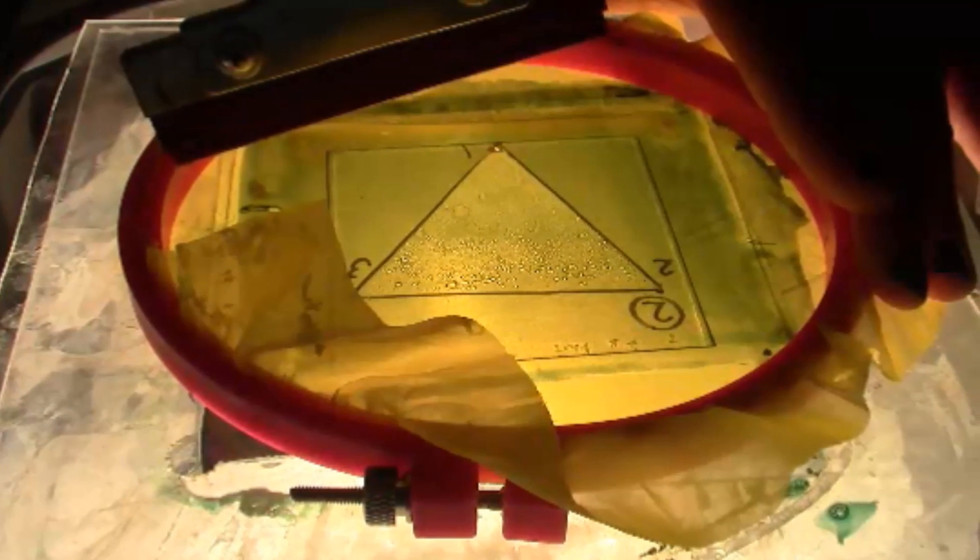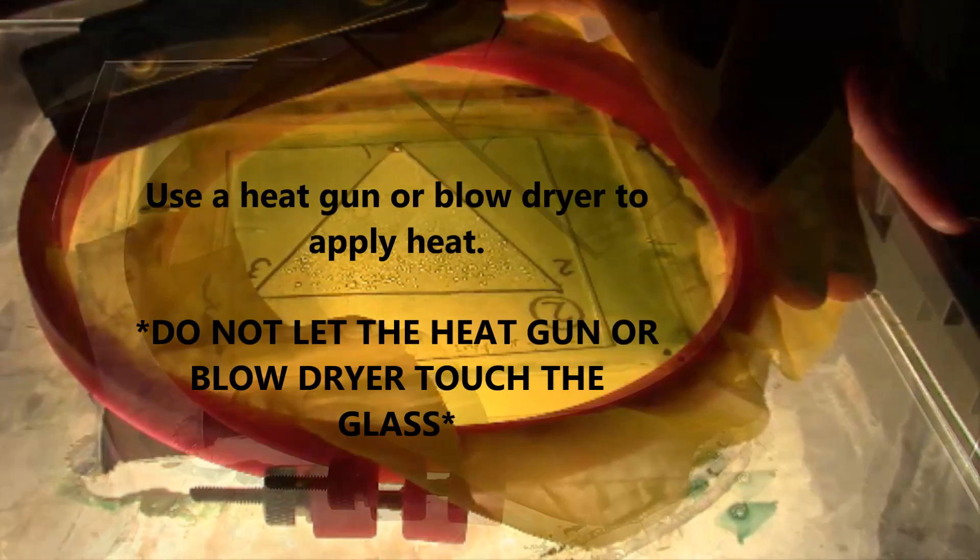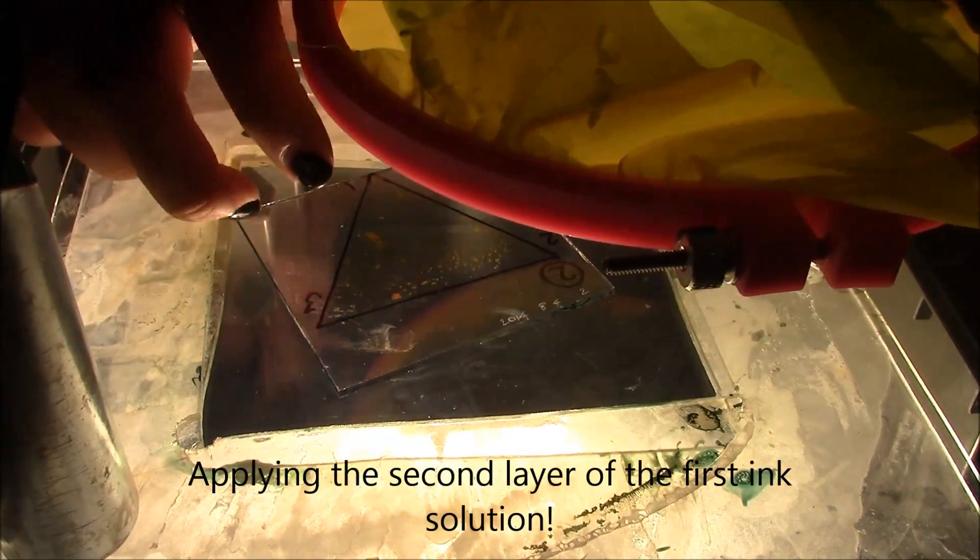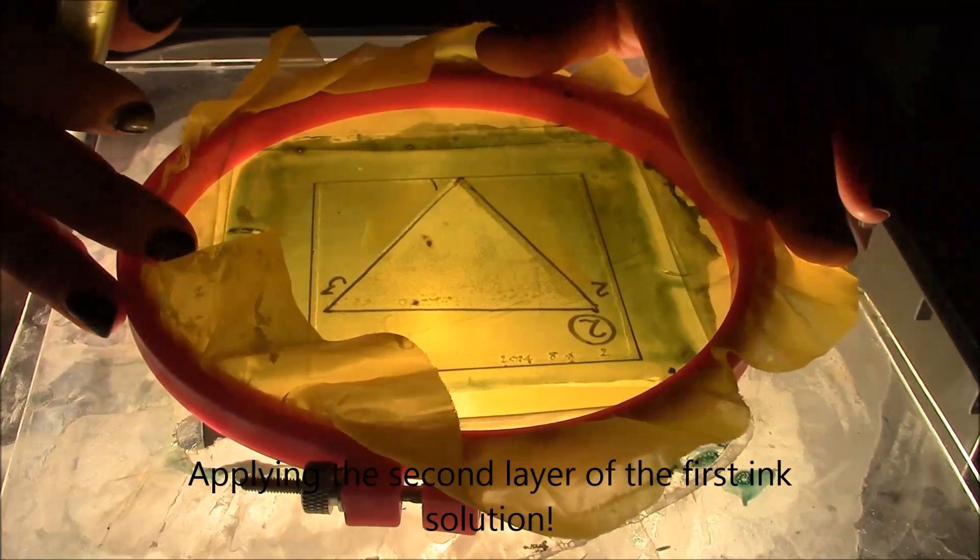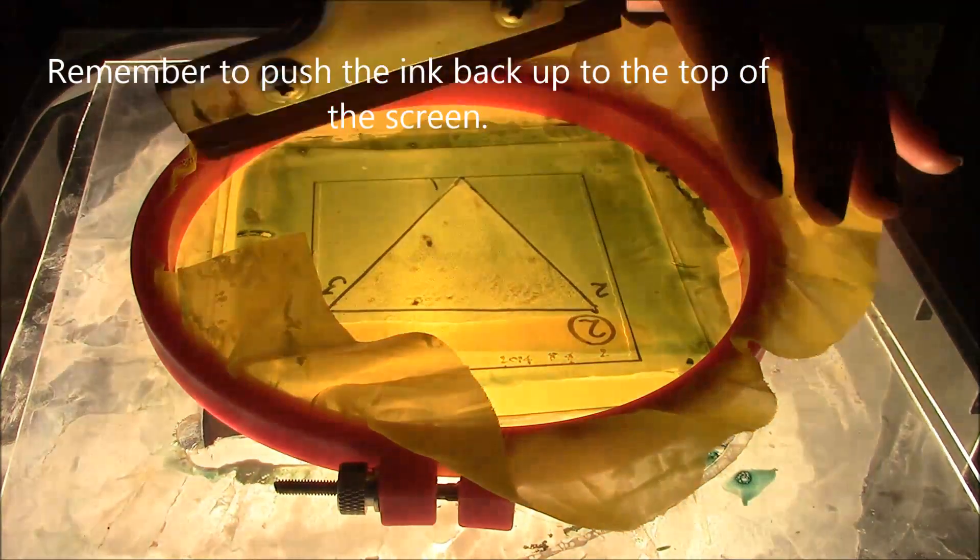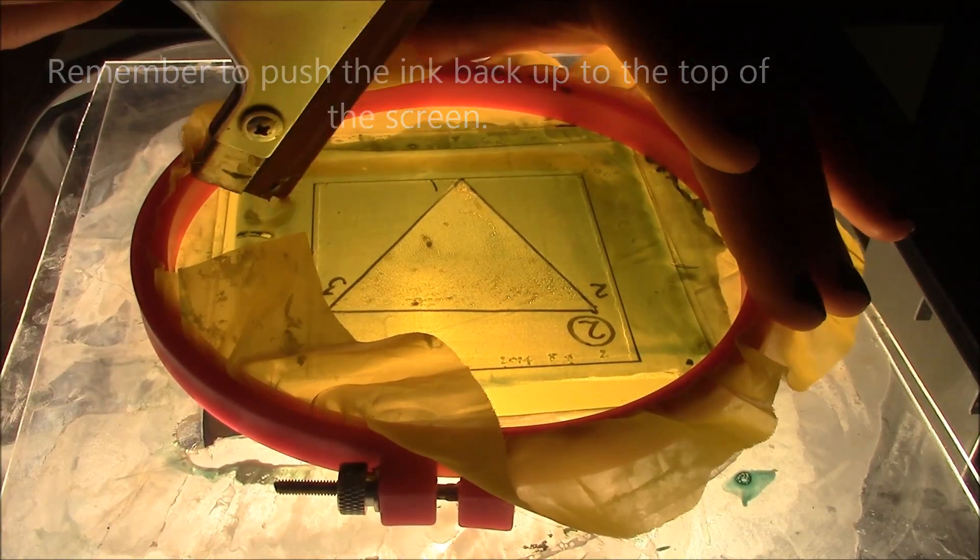Now take your glass substrate number 2 and apply heat. Heat the ink on the plate until the ink no longer contains any water. Doctor blade on another layer of ink and heat until all the liquid has evaporated once more.